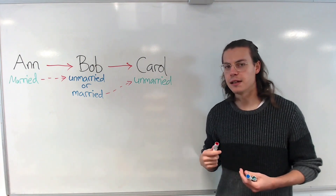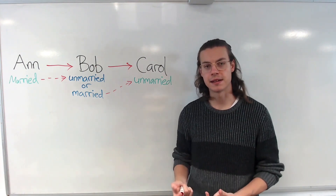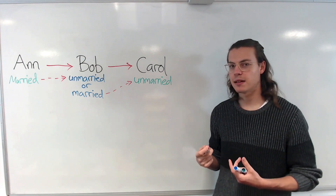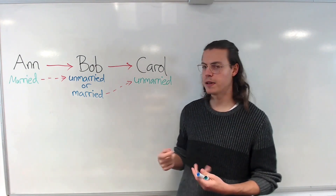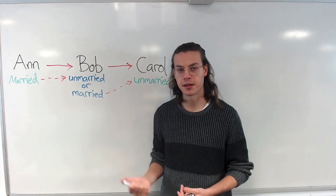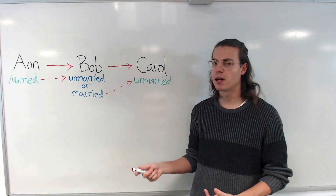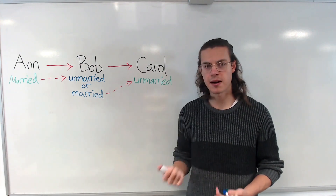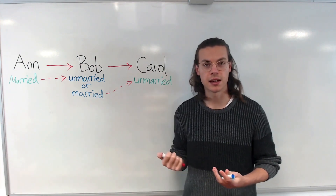Interestingly, in controlled tests, most people fail to see this. It appears at first as if there is not enough information to answer the question — it seems to rely on whether or not Bob is married. But this is not the case.